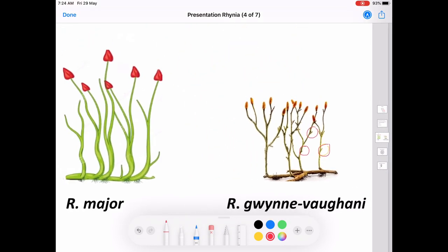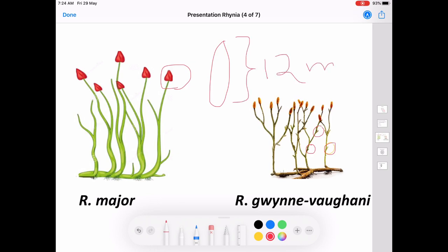In the case of sporangia, the sporangia of Rhynia major is 12 mm in length and 4 mm in width. But in the case of Rhynia gwynne-vaughanii, it is 4 mm in length and 1 mm in width.